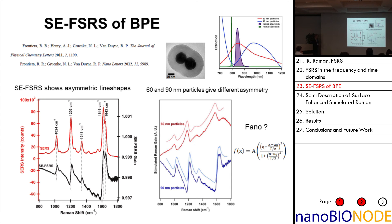Not only that, they found that if they used 90 nanometer particles with plasmon resonances to the red of the probe pulse, you get one spectrum, but if you use smaller 60 nanometer particles where the plasmon resonance is more right on the position of the probe pulse, you get the same lines but the asymmetry is reversed. That problem has been sitting around for a few years now with no papers written on this topic, so we decided to see if we could make some progress.